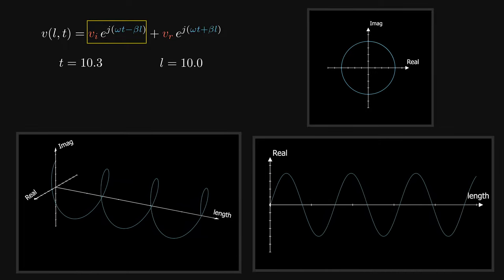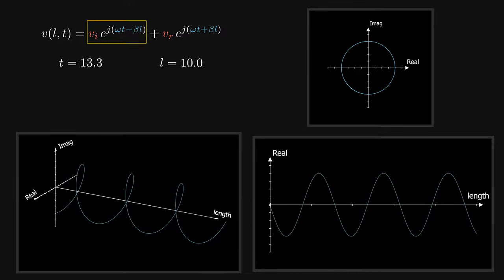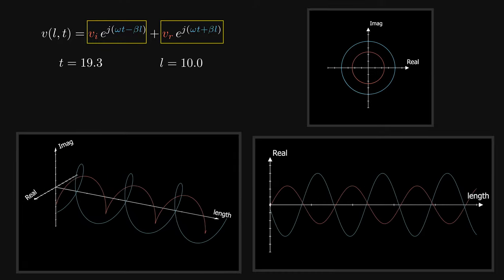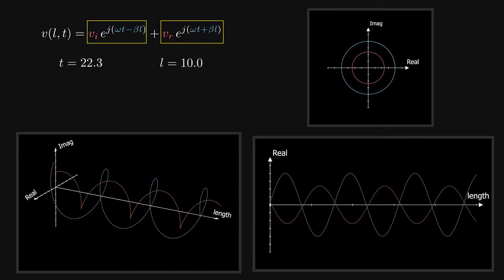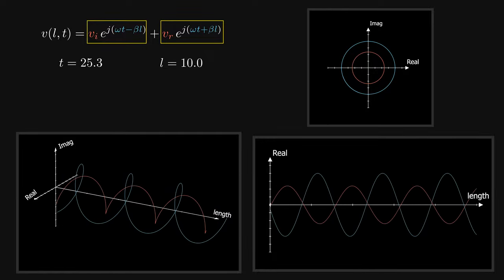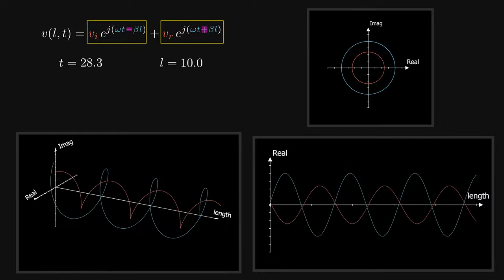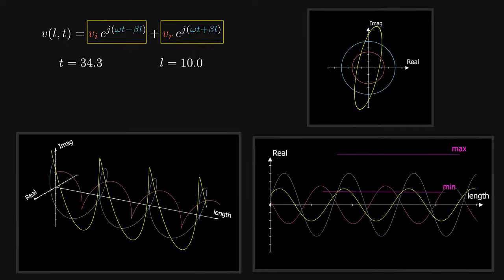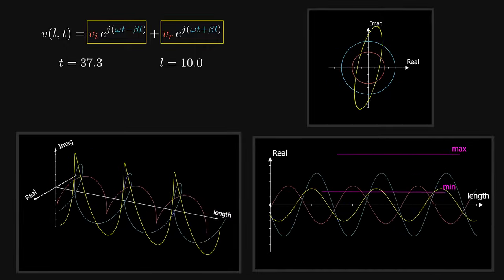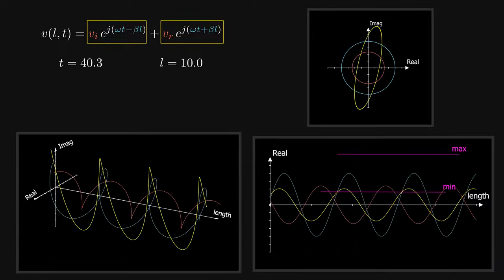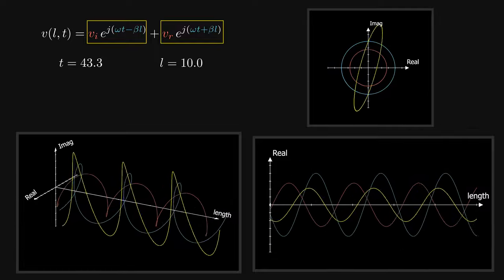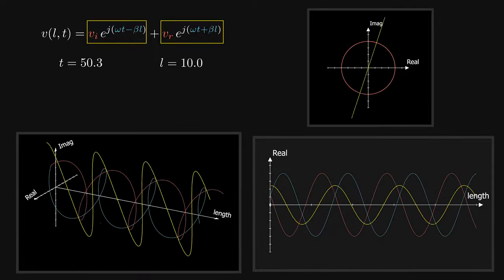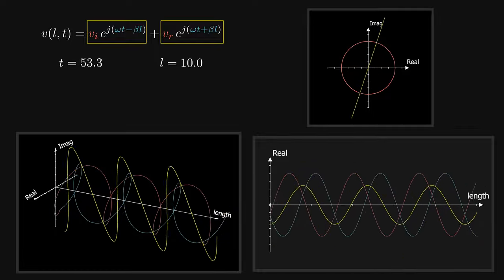The angular frequency determines by how much the phase would change as we sweep the time. If there is mismatch between the load and the characteristic impedance, then there is a reflected signal also distributed sinusoidally along the line. As time goes on, the reflected signal moves in the opposite direction. These two waves are added up together and since they are moving in opposite directions, the resultant is continuously swinging between maxima and minima, becoming more and more standing as the reflected wave gets bigger, and completely standing when the reflected wave equals the incident one.